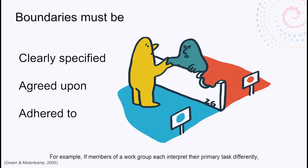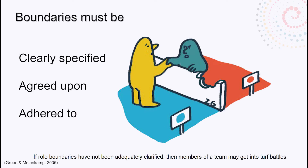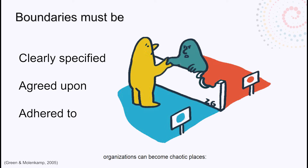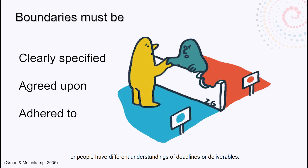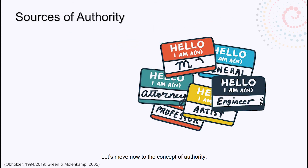For example, if members of a work group each interpret their primary task differently, they may find themselves working at cross-purposes. If role boundaries have not been adequately clarified, then members of a team may get into turf battles. When boundaries are taken as guidelines rather than as clear parameters, organizations can become chaotic places where meetings don't start on time, tasks are forgotten, or people have different understandings of deadlines or deliverables.